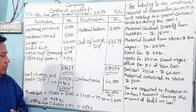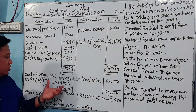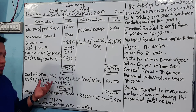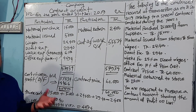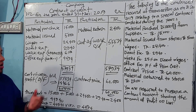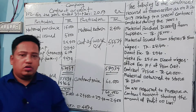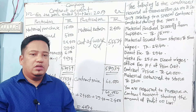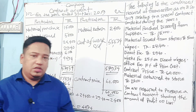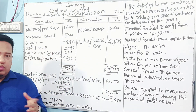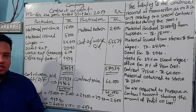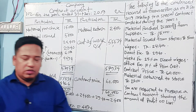We will have a lot of provision and profit. The profit is derived by cash received by work certified. This is from our previous lesson.